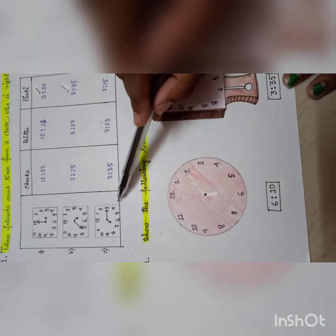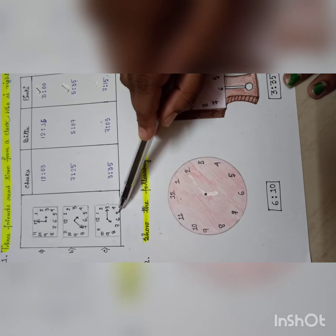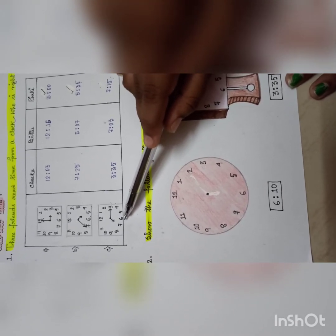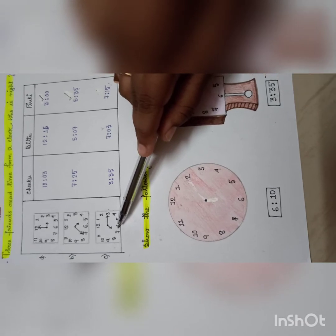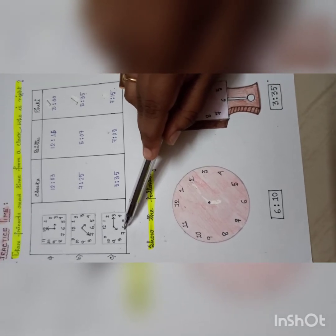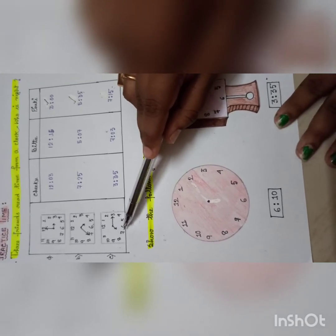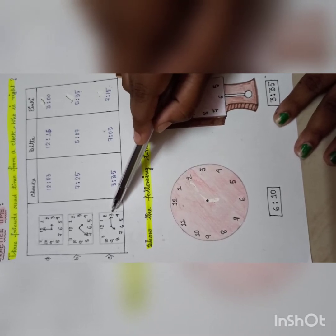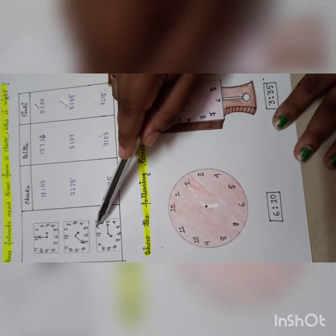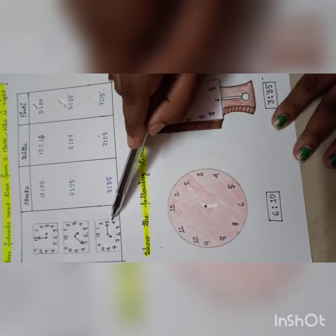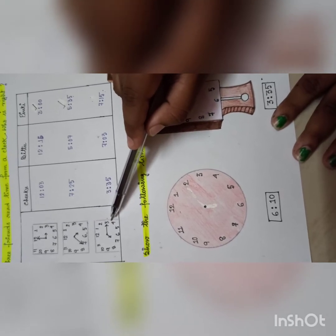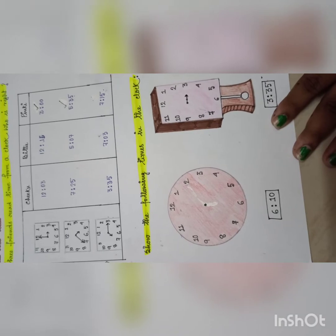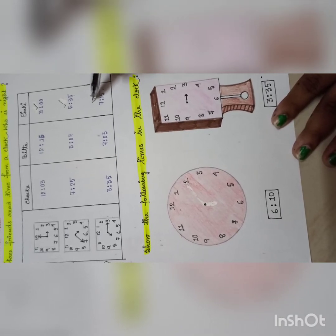Now see the third one. Where is the hour hand? The hour hand is at 7. Where is the minute hand? The minute hand is at 3. So 5×3 = 15 — that means the time is 7:15. So again, Pinky is right.